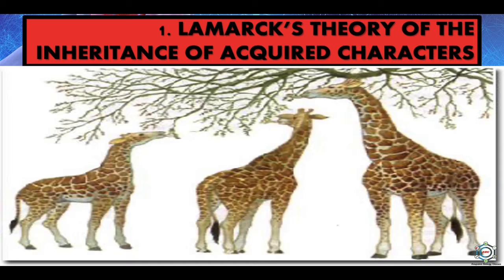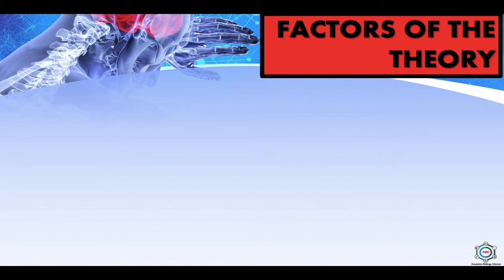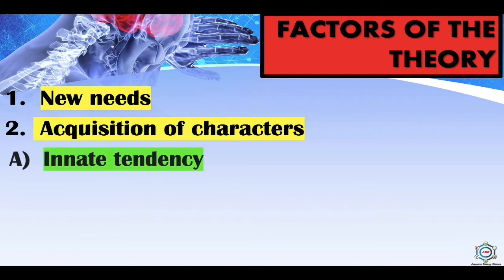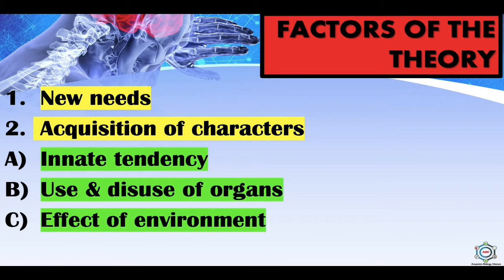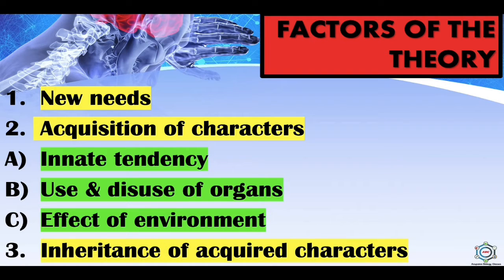He was ridiculed by George Cuvier, who said you can get or lose any organ by merely wishing for it. Lamarck's theory is based on three factors: first, new needs; second, acquisition of characters — which includes inner tendency, use and disuse of organs, and effect of environment; and third, inheritance of acquired characters.